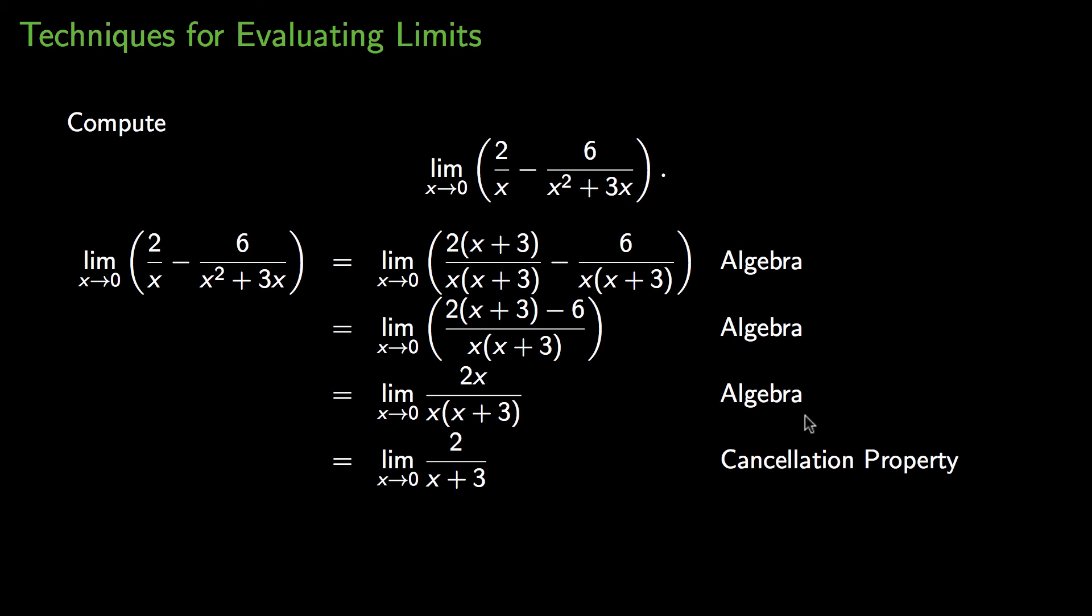So this limit is equal to the limit as x approaches 0 of 2 over x plus 3. And I get to use my direct substitution property on that limit.